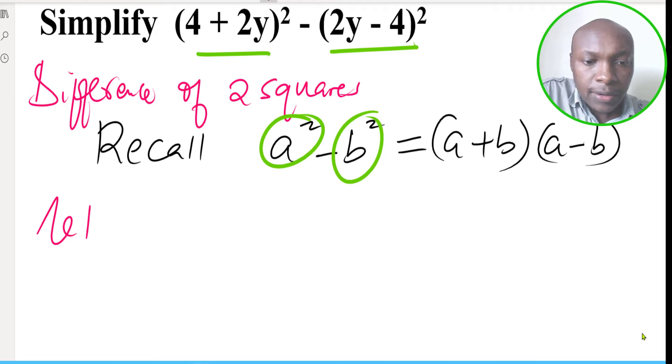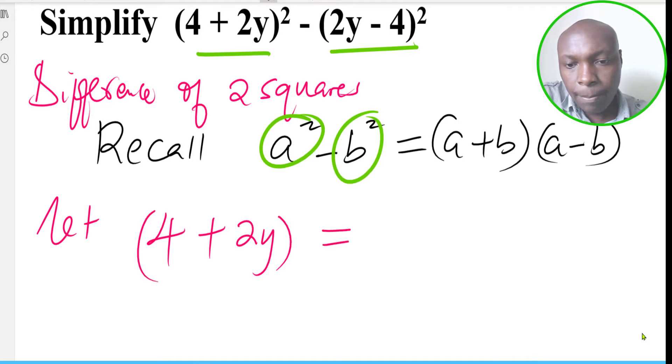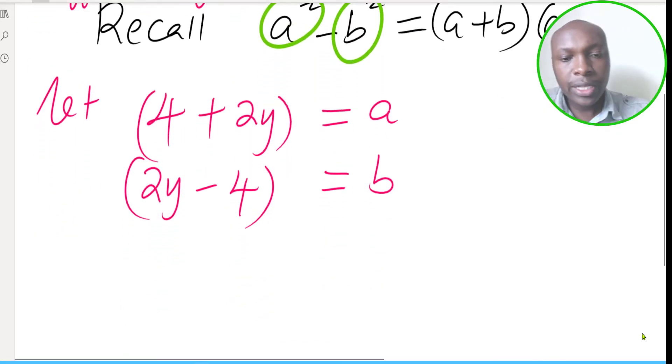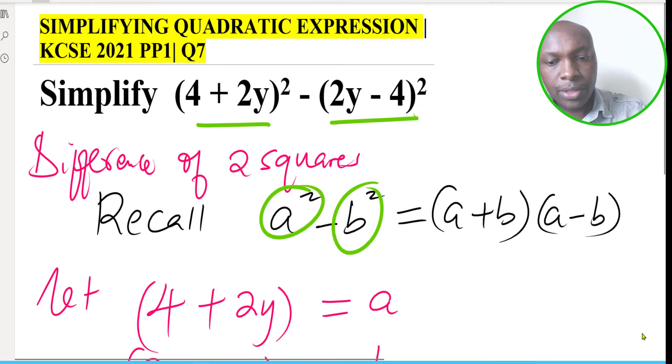You simply let, you can let (4 + 2y) that one be letter a, and then (2y - 4), you can let that to be b. Now having that, you can now substitute these values of a and b in this expression.